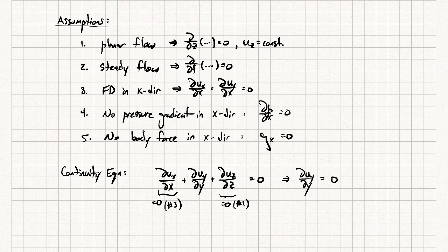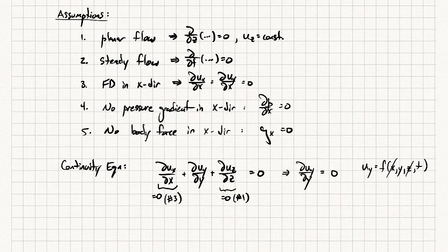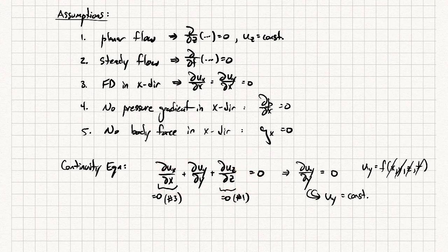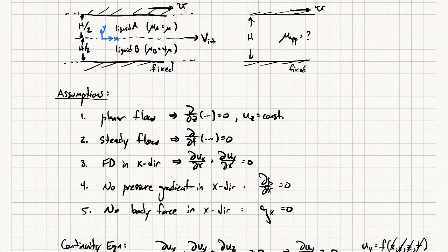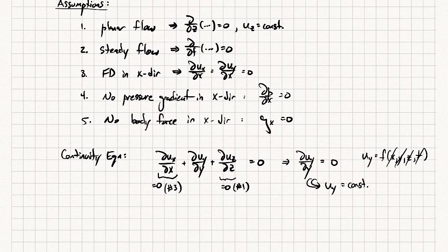In general, the y velocity could be a function of x, y, z, and t. But it's not a function of x because it's fully developed, not a function of z because it's planar, not a function of time because it's steady, and now we know it's not a function of y either. So it's not a function of anything — at best the y velocity is a constant. This equation is general and applies to either liquid.